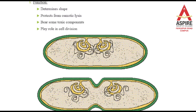Now the functions of the cell wall: the cell wall determines the shape of the cell. It protects the bacterial cell from osmotic lysis. If bacterial cells are placed in water, sometimes bacterial cells burst. But cells which have a cell wall do not undergo osmotic lysis due to the presence of the cell wall. So the cell wall prevents the bacteria from osmotic lysis.